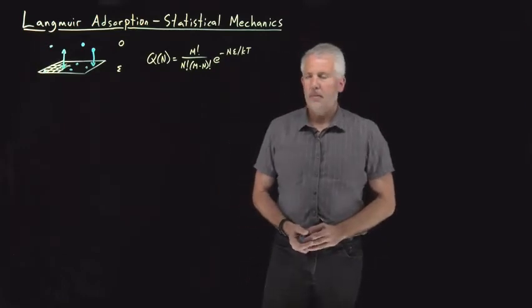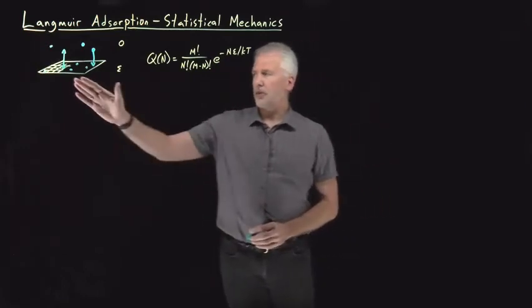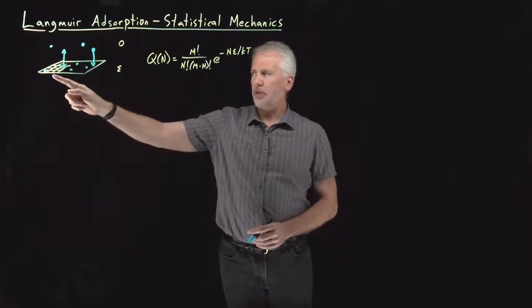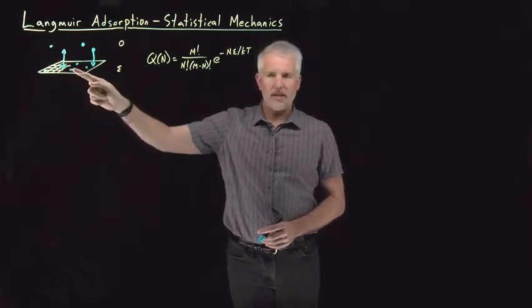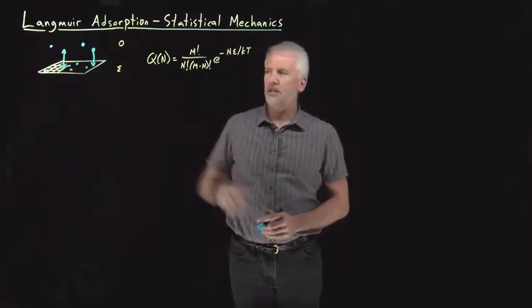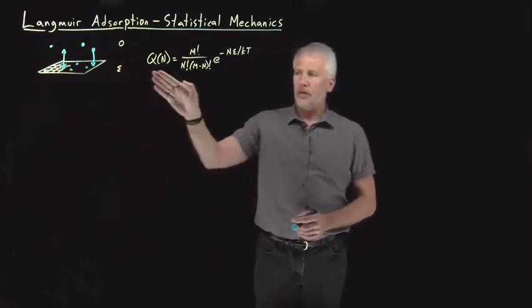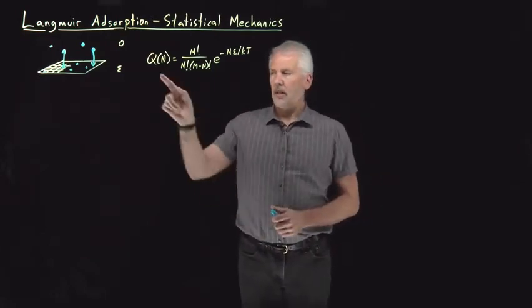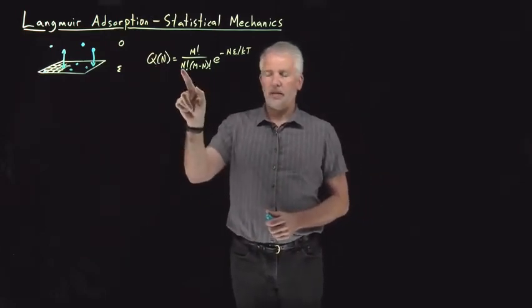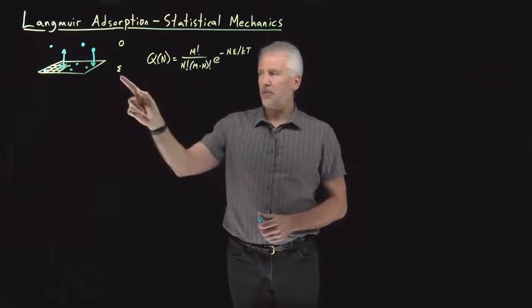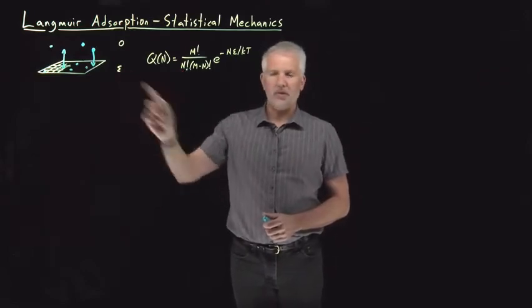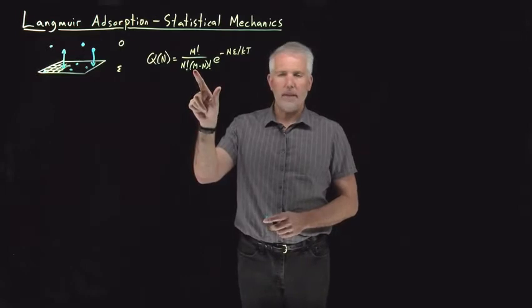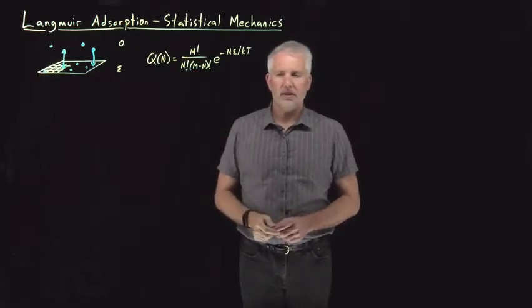We have a lattice model for adsorption, where molecules can either be adsorbed in one of these lattice sites on the surface or up in the gas phase. We've written down a partition function for when n of the molecules are stuck to the surface with an energy of epsilon for each one of them, out of the total M different surface sites.